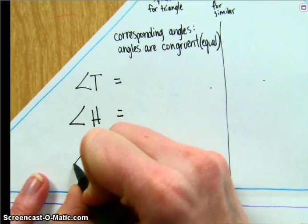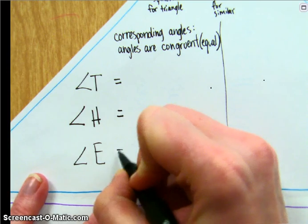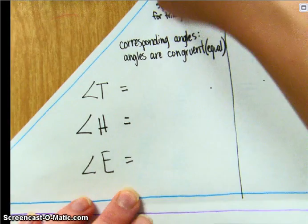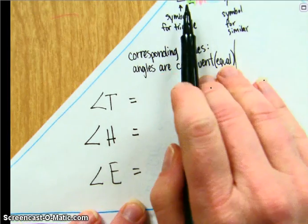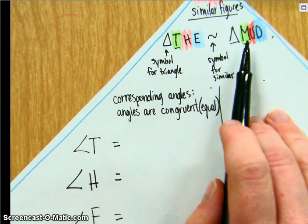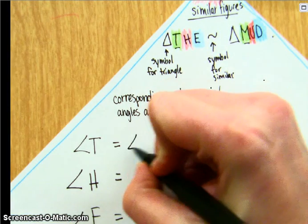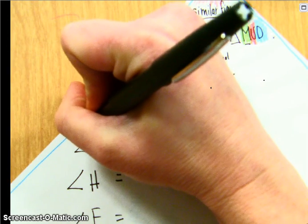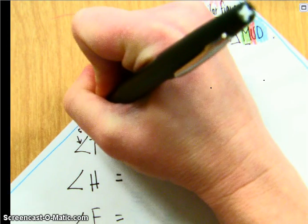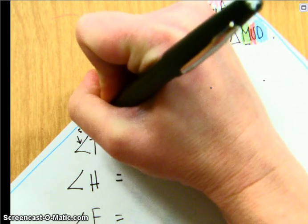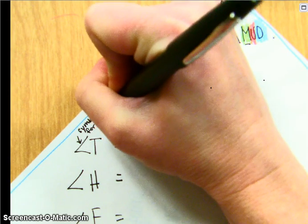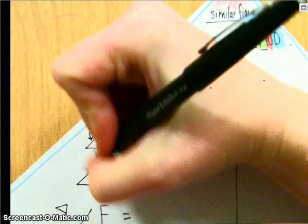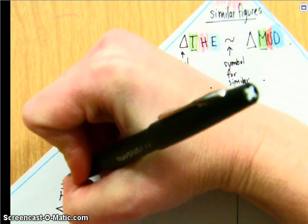Angle T is congruent to angle M. By the way, this is the symbol for angle, if you didn't know that. Angle, not angel L-E. And this is, all of these angles are from the same triangle, triangle THE.